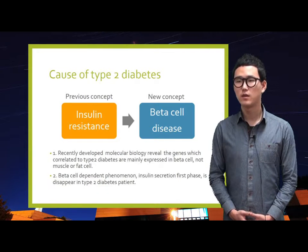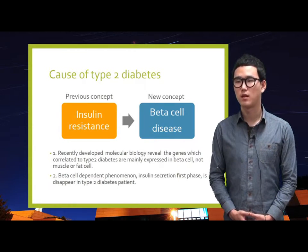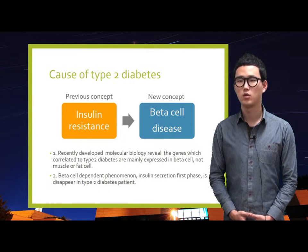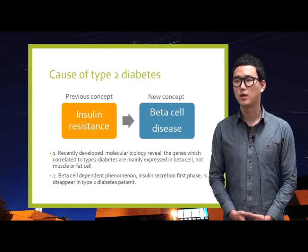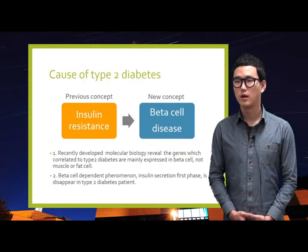First, recently developed molecular biology revealed that the genes which correlate to Type 2 diabetes are mainly expressed in beta cells, not muscle or fat cells. This means the genetic problems of Type 2 diabetes are not related to glucose uptake, but to insulin synthesis in beta cells. Second, the beta cell-dependent first phase of insulin secretion is disappeared in Type 2 diabetes patients.